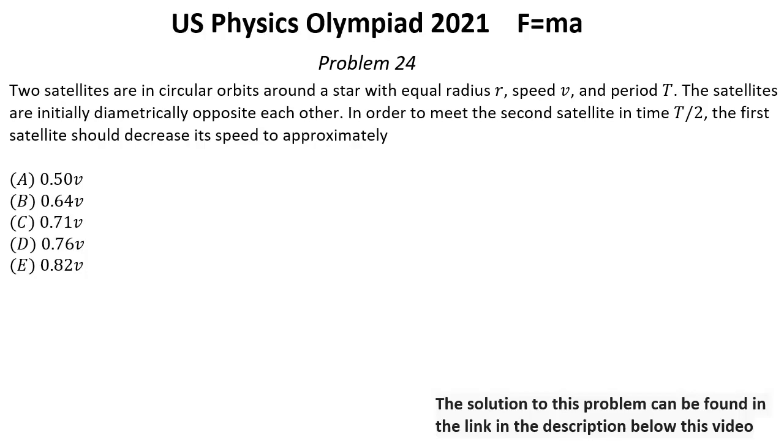In order to meet the second satellite in time T/2, the first satellite should decrease its speed to approximately what value?